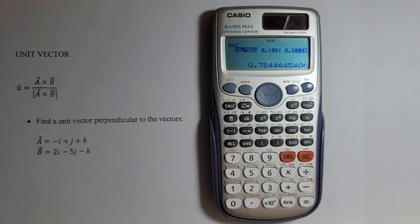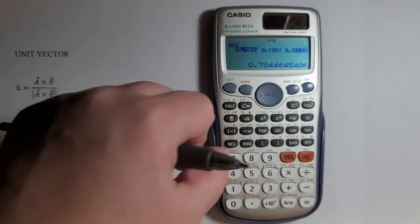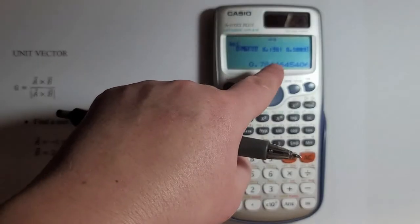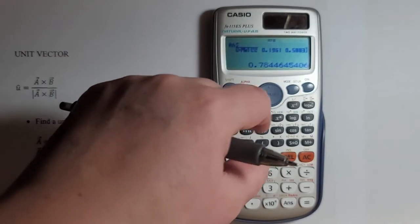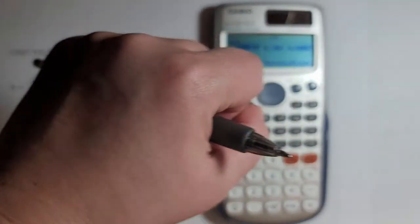Here it is. This is our unit vector: 0.78i + 0.196j + 0.59k.